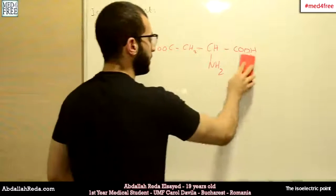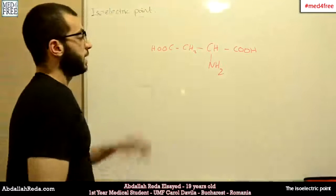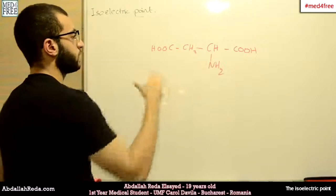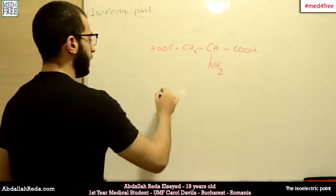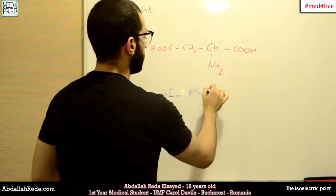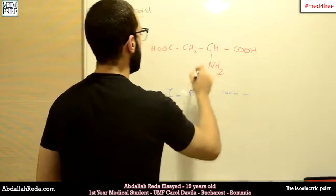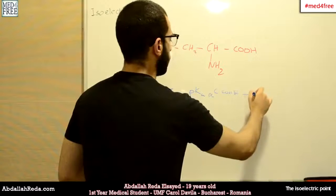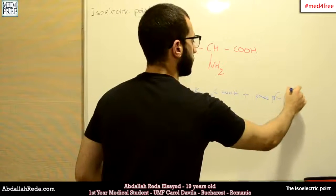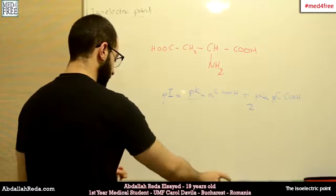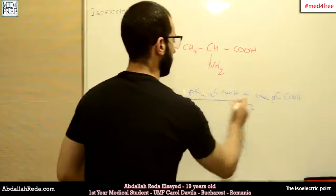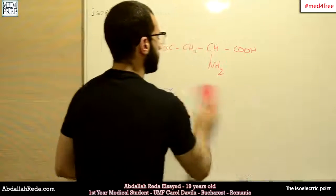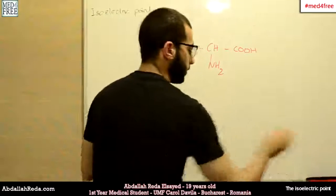Now let's look at a dicarboxylic amino acid with two carboxylic groups. In this case we do not consider the amino group as an effector in determining the PI. So the PI equals the PKA of the alpha carbon carboxylic group plus the PKA of the beta carbon carboxylic group, all divided by 2. Since both are around 3, we get 3 plus 3 divided by 2, which gives us around 3. This is the PI of dicarboxylic amino acids.